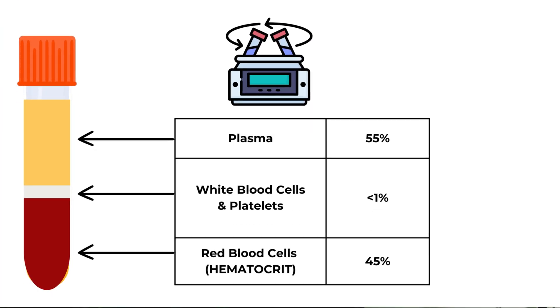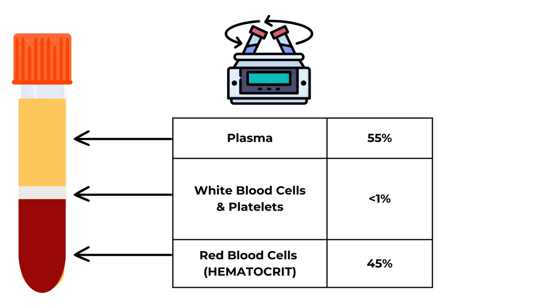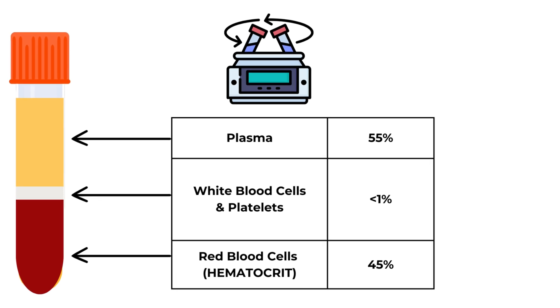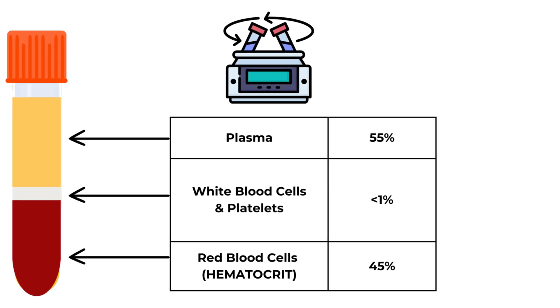Look at this tube of centrifuge blood. The top layer is plasma, which is over 90% water, but contains proteins, electrolytes, glucose, waste products, and other stuff. The middle layer is the white blood cells and platelets. And the bottom layer is the packed red blood cells, AKA hematocrit. You can see normal hematocrit is about 45%.